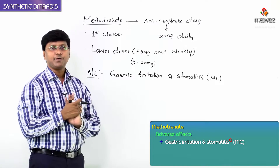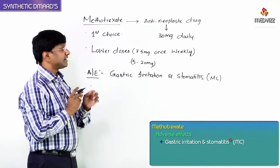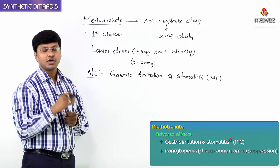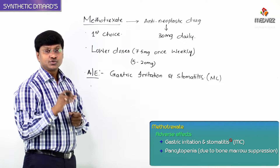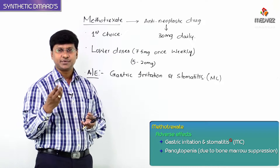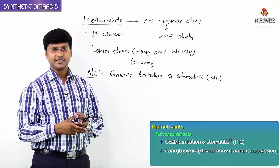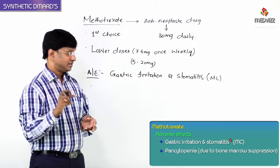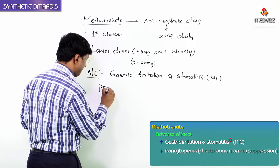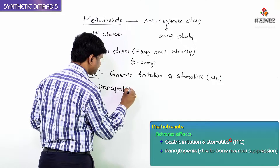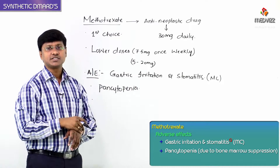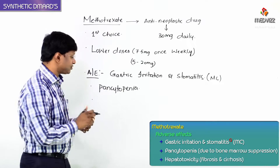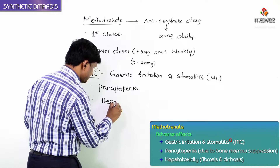Another important point: methotrexate causes very severe bone marrow suppression or depression. Because all blood cells — erythrocytes, platelets, and WBCs — are synthesized in the bone marrow, this suppression leads to pancytopenia.